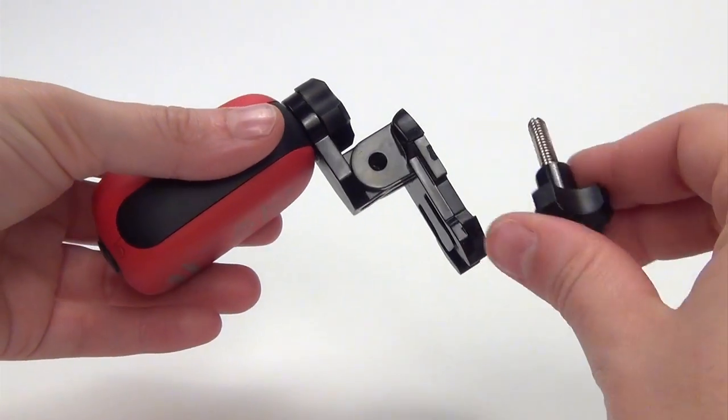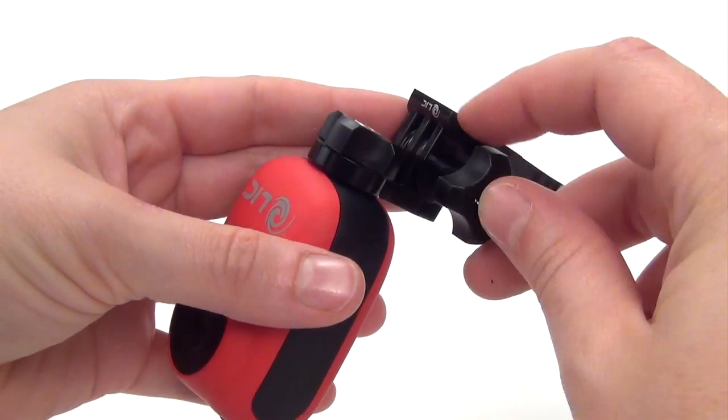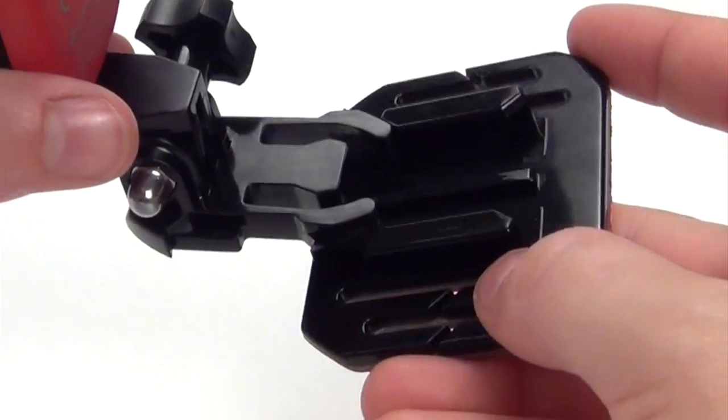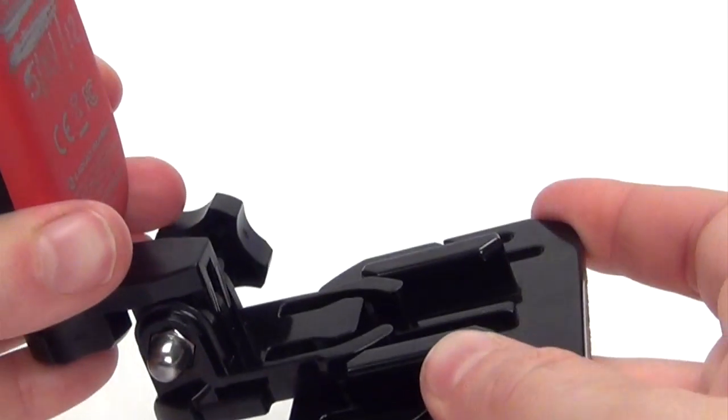Then, take the quarter inch screw mount and screw it into the bottom of the camera. If you have any trouble, you can use a Phillips screwdriver to assist you with the process. This piece then fits into our base just like you would buckle a helmet and you're all set to go.